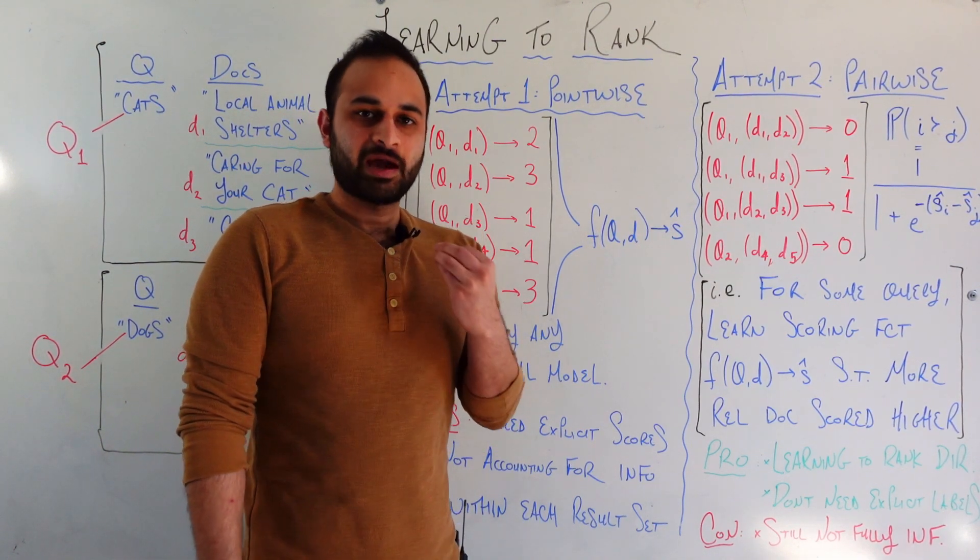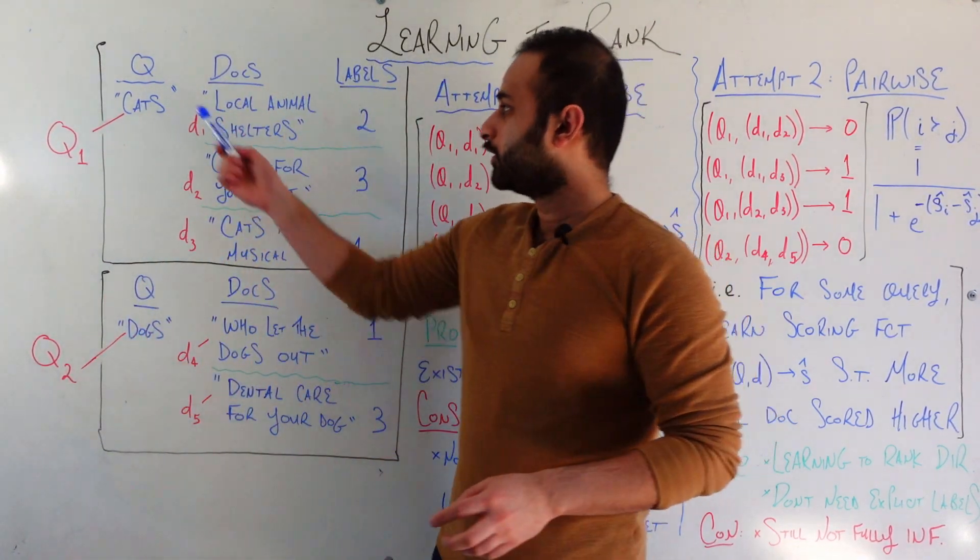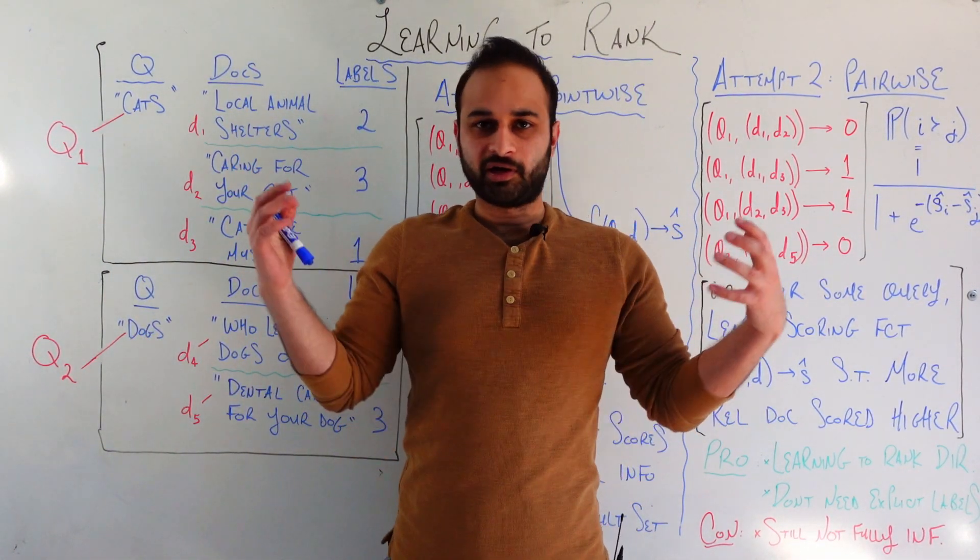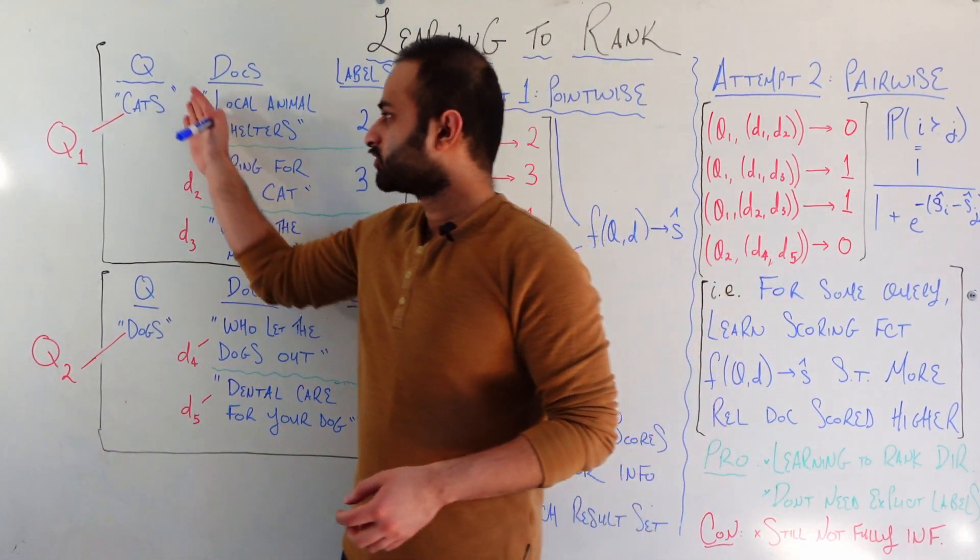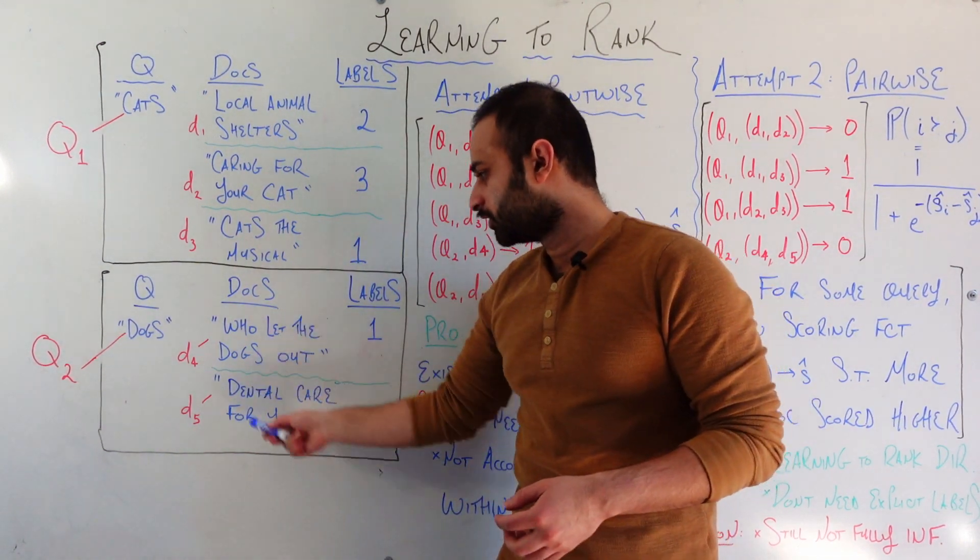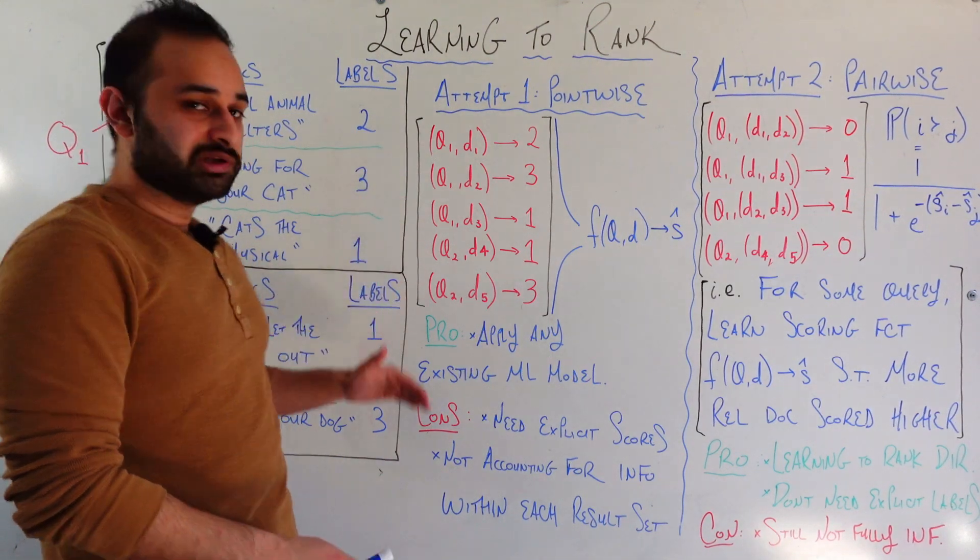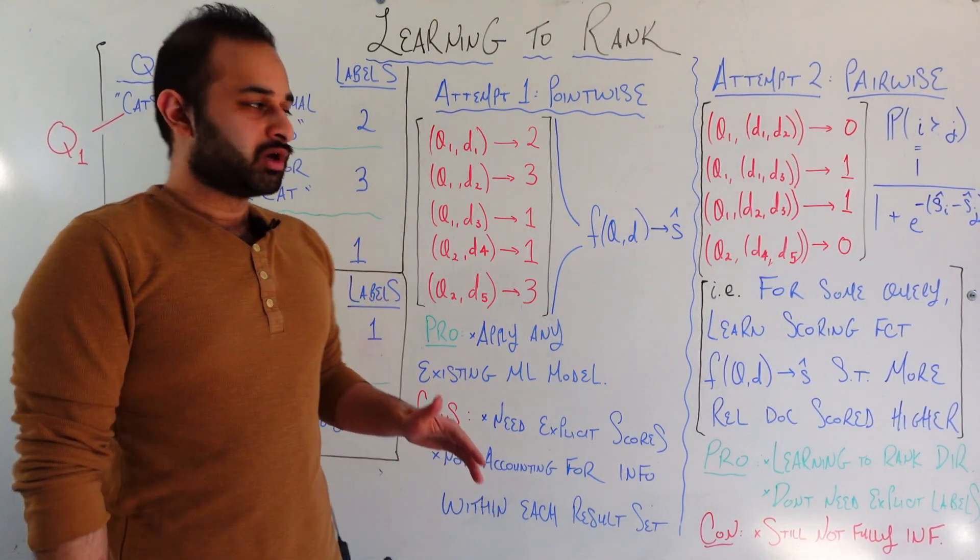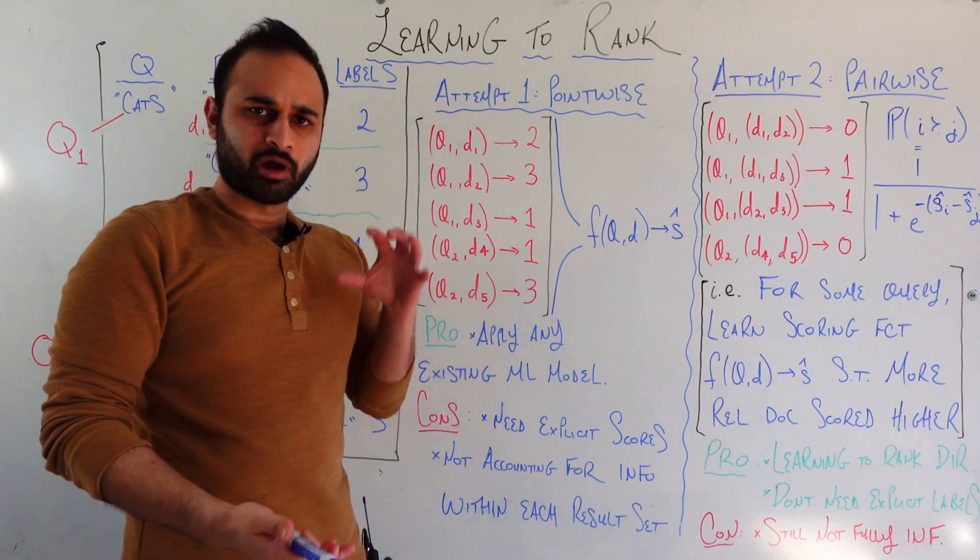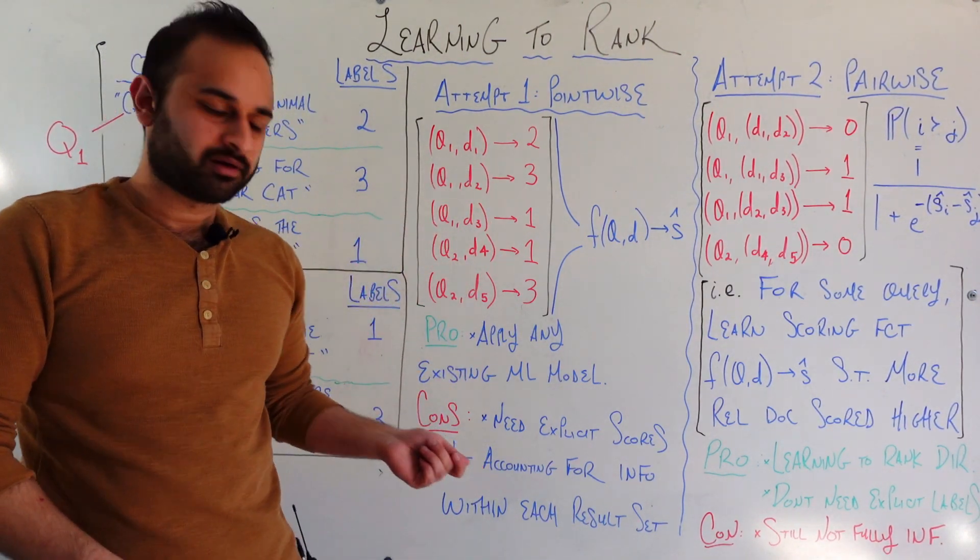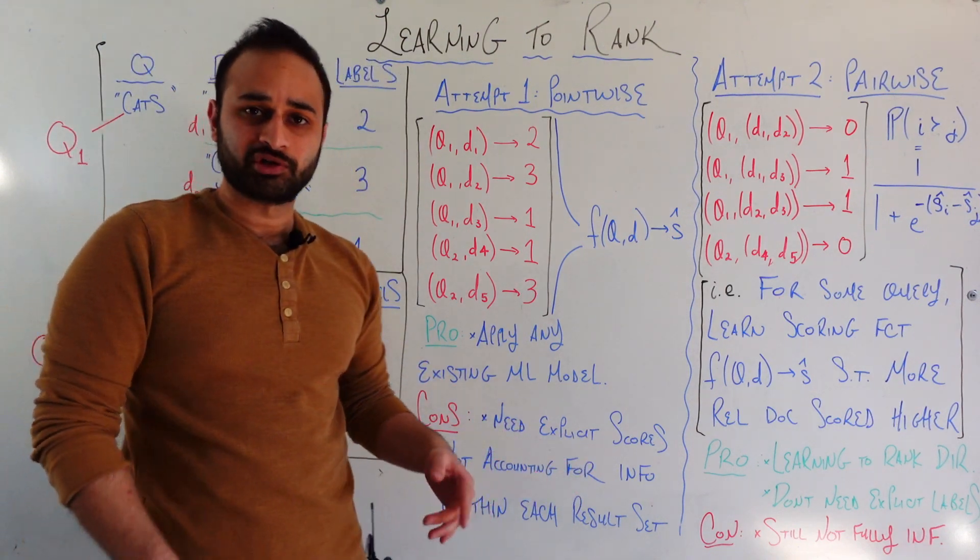But let's talk about why we don't use point-wise models for learning to rank typically. We are missing out on a very important element here. We are missing out on the fact that queries and documents have a very interesting relationship. For example, these three documents are tied to this query, and these two documents here are tied to this query. And by framing the training data in this sense, we lose all that information. We're not accounting for the information within each result set.